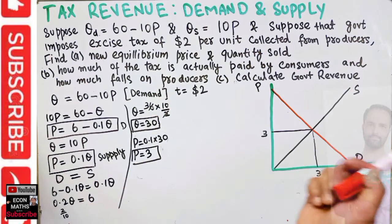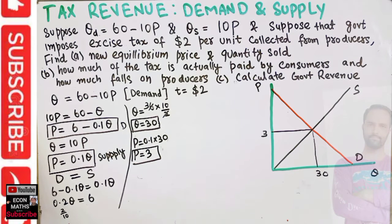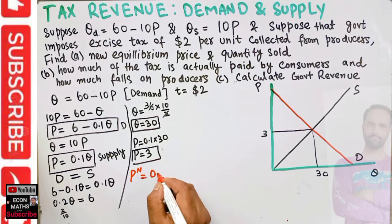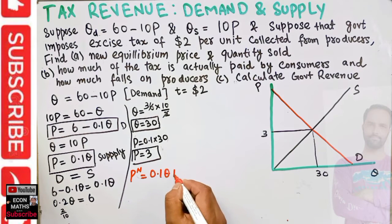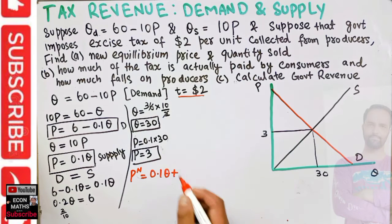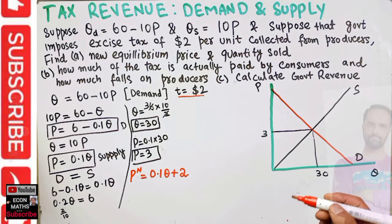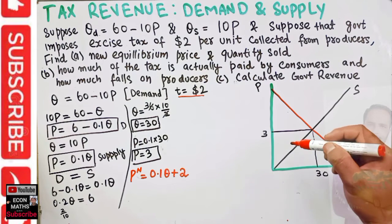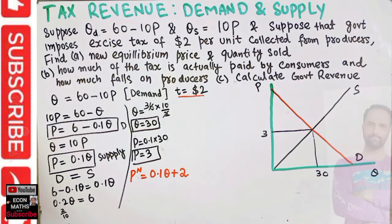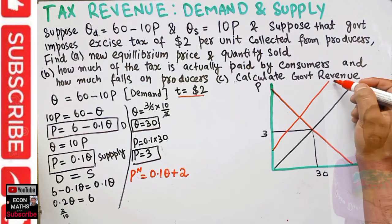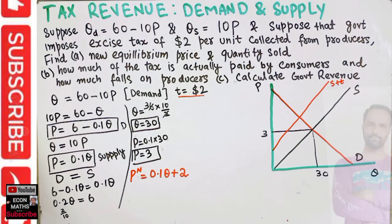With an excise tax of two dollars per unit collected from producers, our new supply function becomes: p_new equals 0.1q plus 2. With the imposition of the per unit tax, the supply function shifts upward because marginal cost has increased.